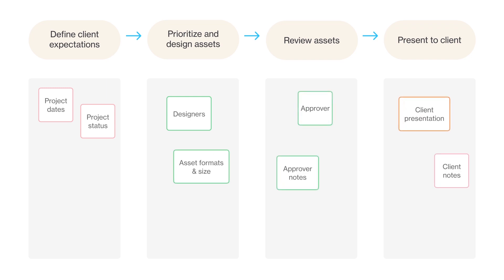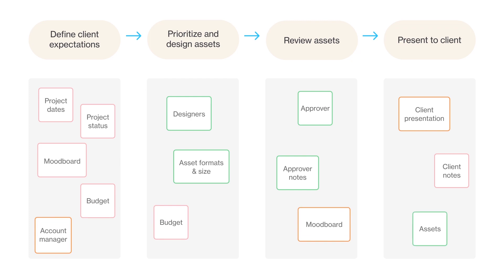In Airtable, all of your information will be organized into tables. These are distinct lists that contain similar information. Distinct lists provide organizational clarity as to where your information will live, and they allow you to make quick connections, identify patterns, and streamline your work.